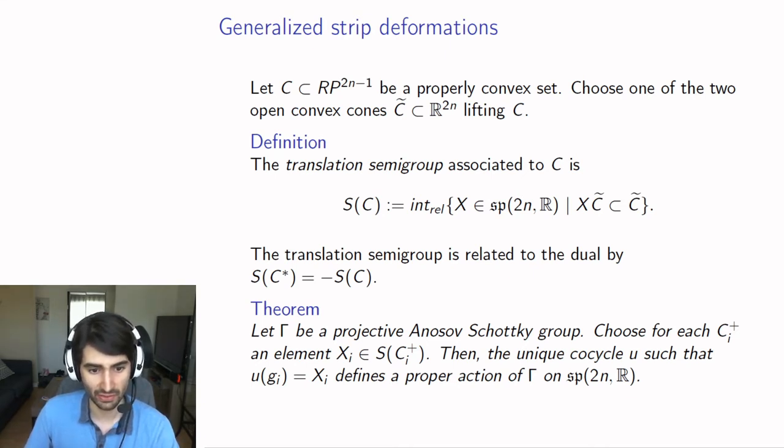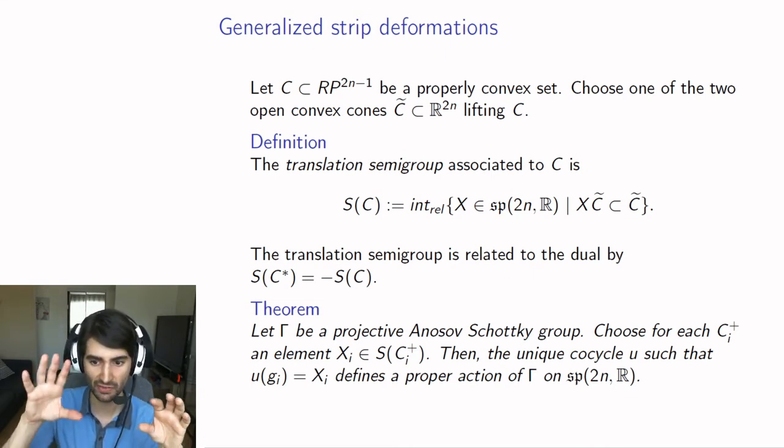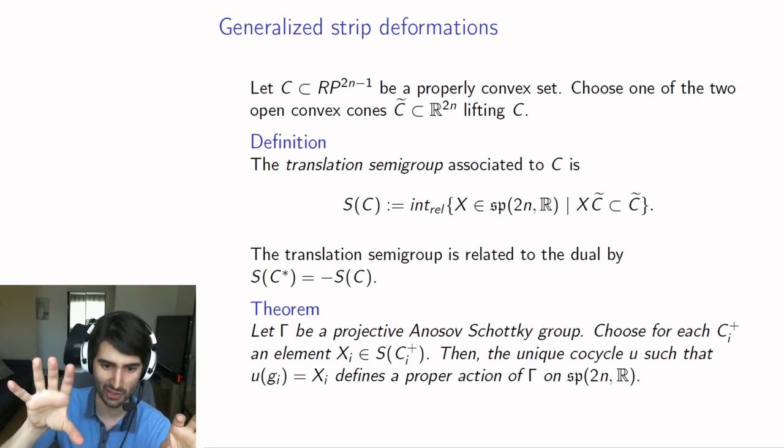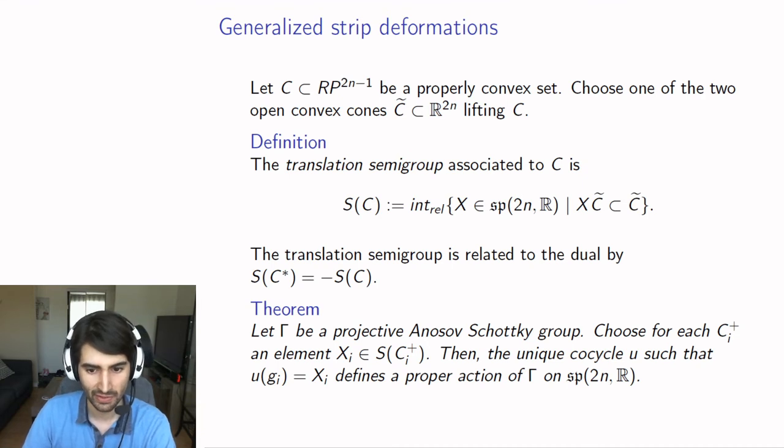Our first theorem is that if you have a projective Anosov-Schottky group as described before—think of the four tetrahedra in the picture—then you choose for each attracting tetrahedron an element Xi inside the translation semi-group. Think of this as being a tangent vector to a path of representations which map the tetrahedron strictly inside itself. Then the cocycle that you get, which to each generator assigns this element, will define a proper action of gamma on the Lie algebra.